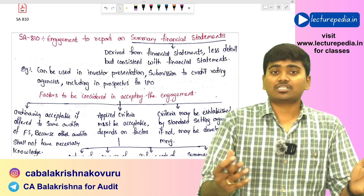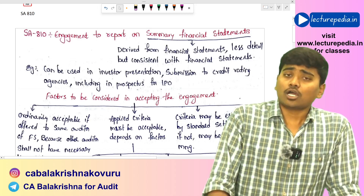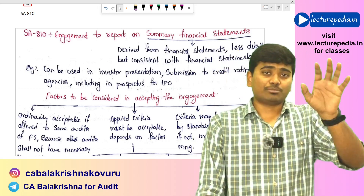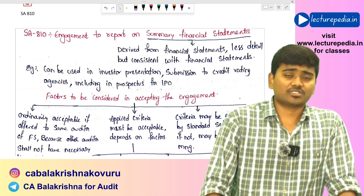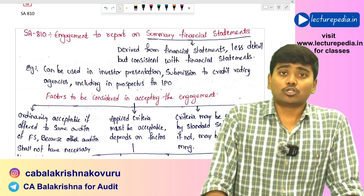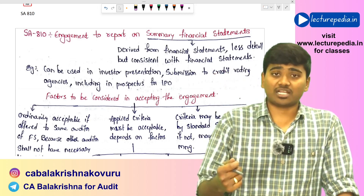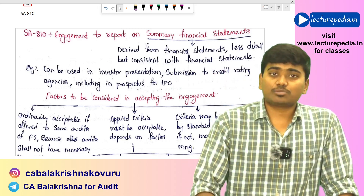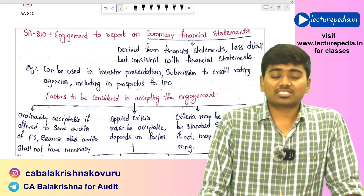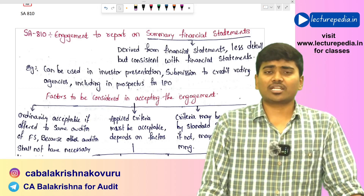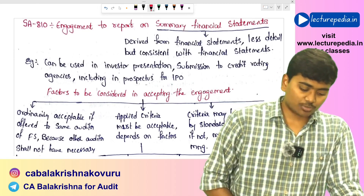Summary financial statements are also audited. Do the auditor of the complete set of financial statements and the auditor of summary financial statements have to be the same? The answer is no — you can appoint different auditors. However, it is advisable and preferable to appoint the same auditor for both, because that auditor already has complete knowledge of the financial statements and can use audit evidence obtained from the complete set for the summary financial statements as well.